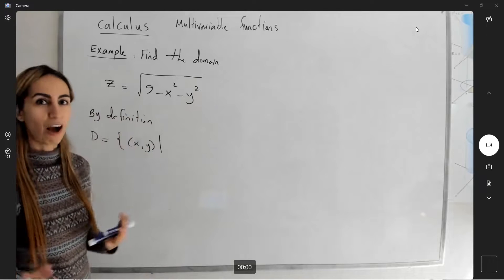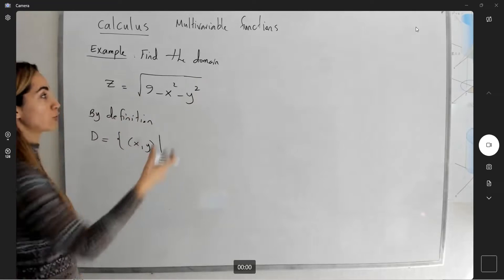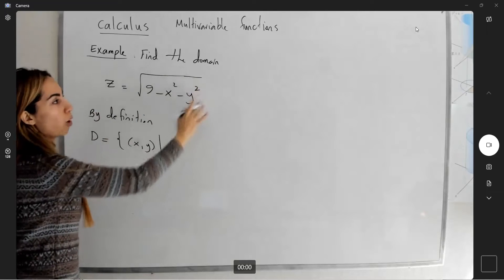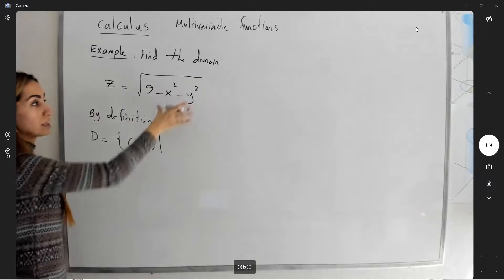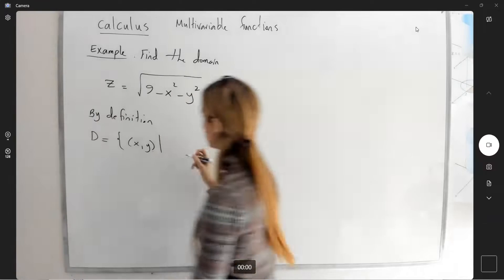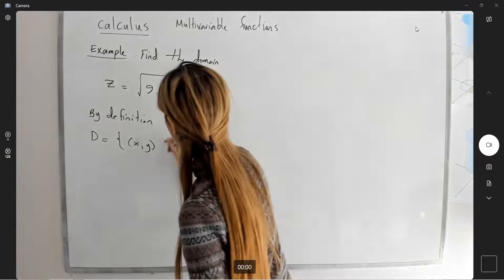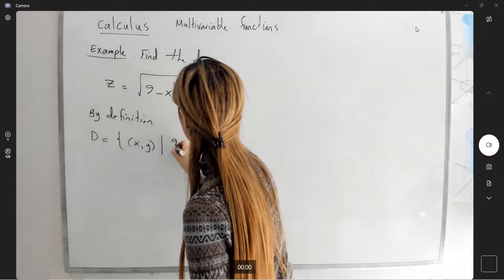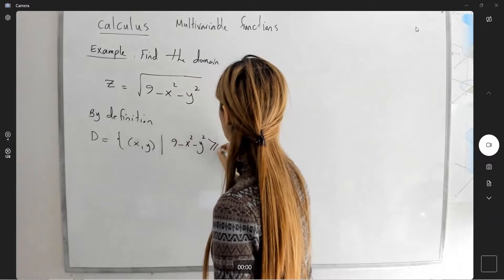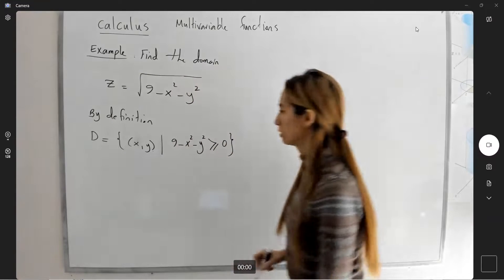Now that we got used to the idea of how to deal with these types of functions, we have a radical with a quantity inside the radical. This is a relationship between x and y, right. So this guy must be larger than or equal to zero. So the condition is that 9 minus x squared minus y squared is larger than or equal to zero.